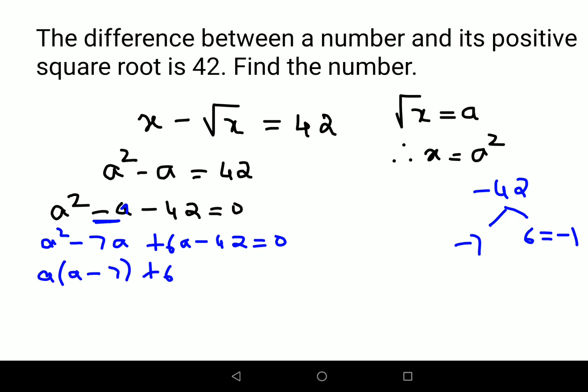So we have (a - 7) = 0 or (a + 6) = 0. These are the two values which are equating to 0.